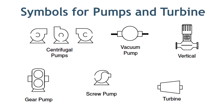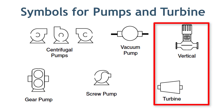You can see the symbols for various types of rotary equipment such as centrifugal pump, vacuum pump, and also positive displacement pumps such as gear and screw type. The last two symbols are of vertical pump and turbine.